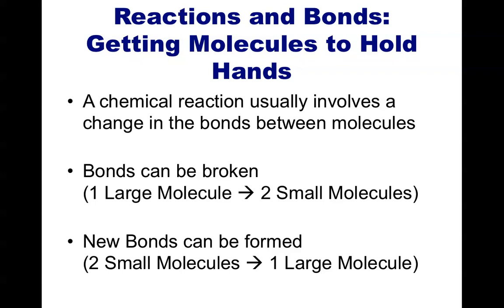When the bonds between molecules and atoms are changed, either new bonds are made or old ones are broken, and a chemical reaction has taken place. You can split larger molecules into smaller ones or go in the opposite direction.